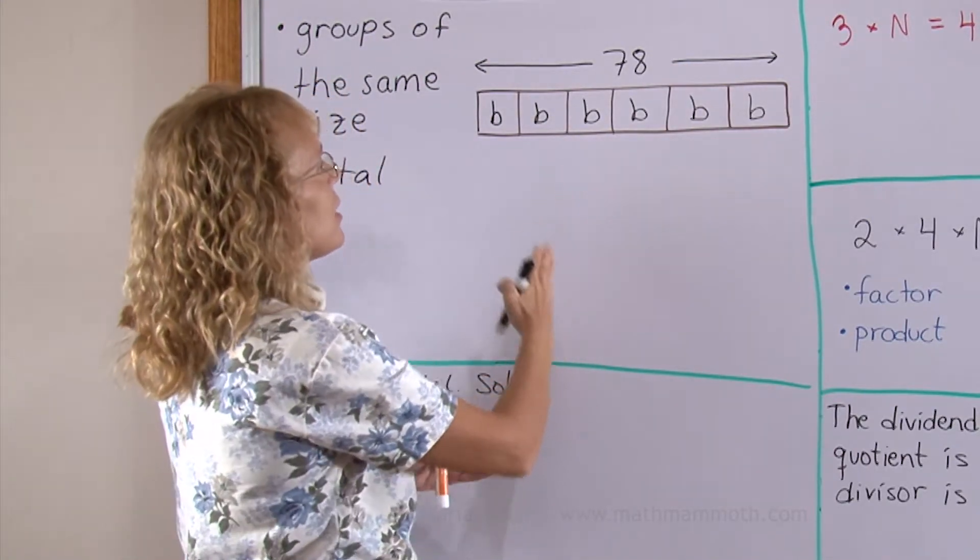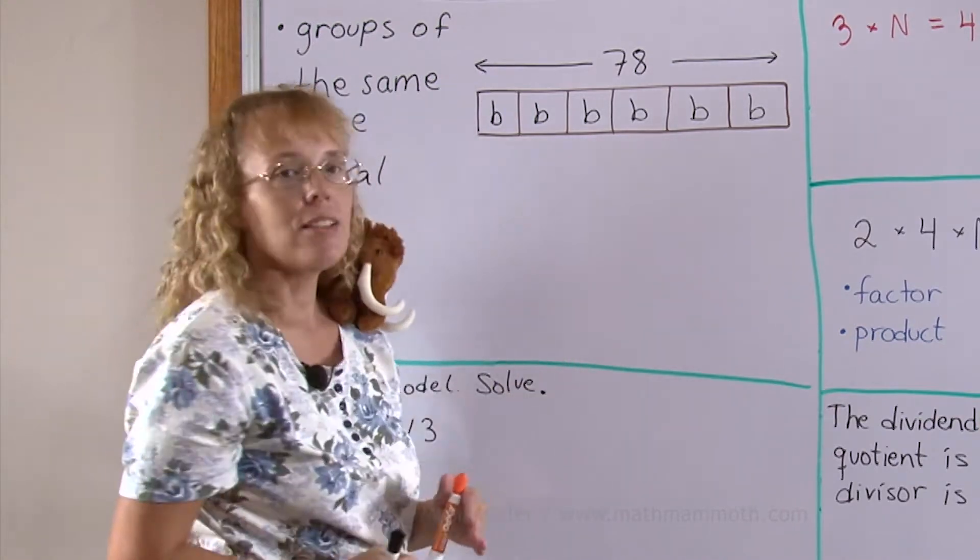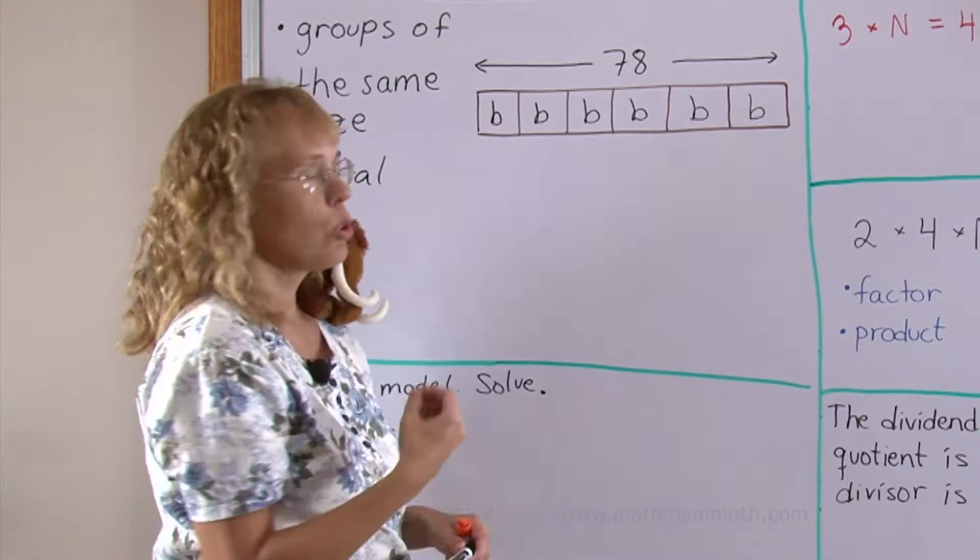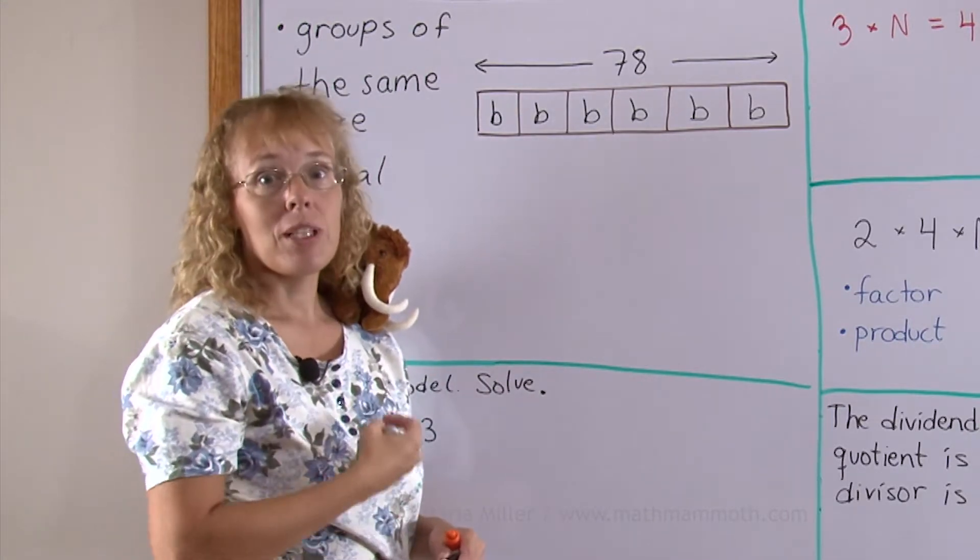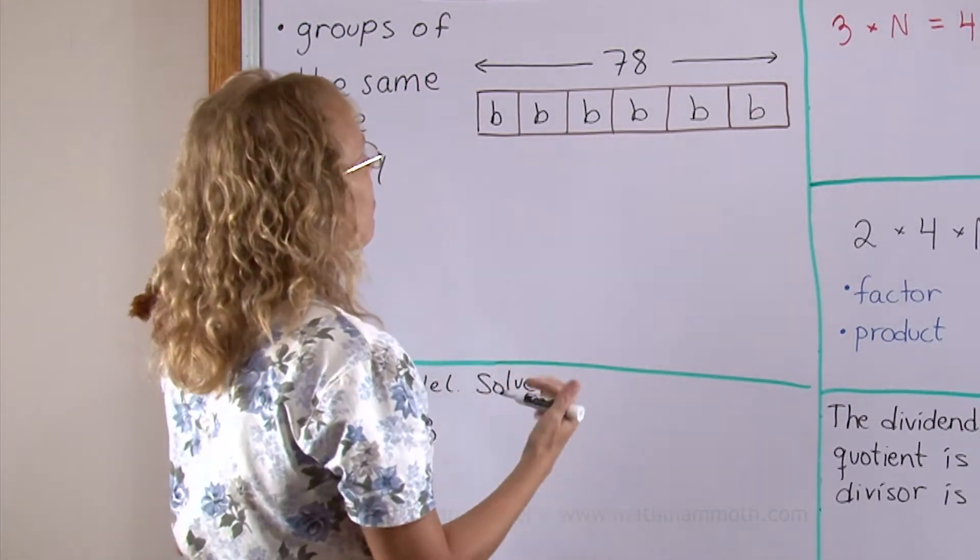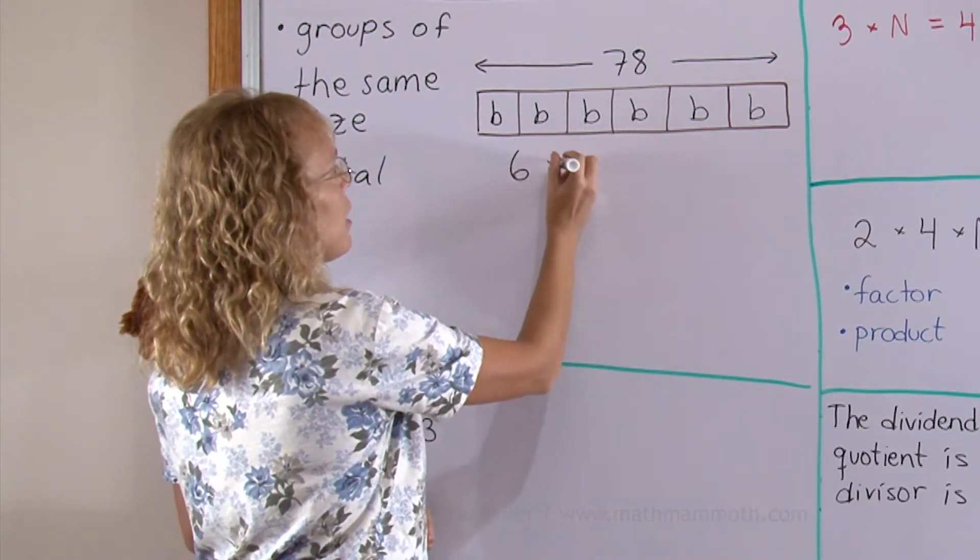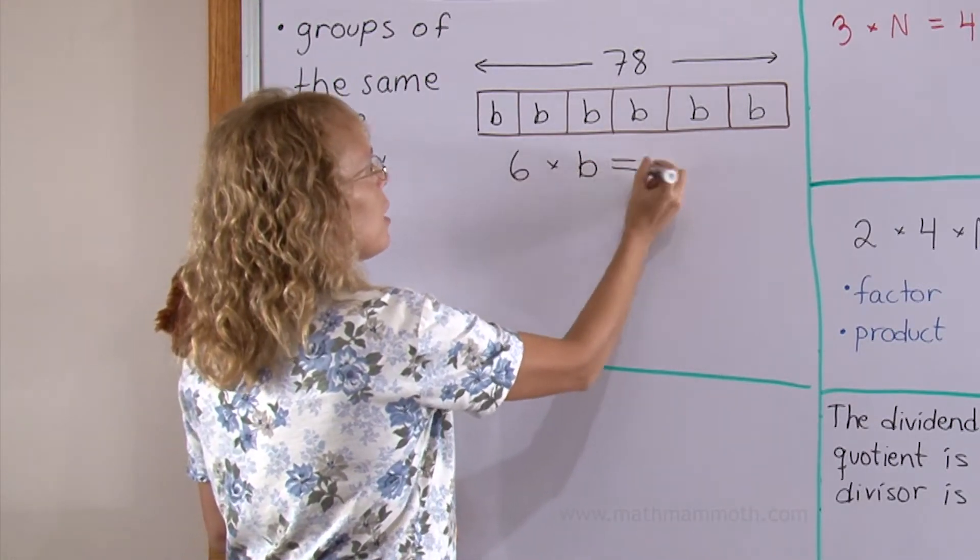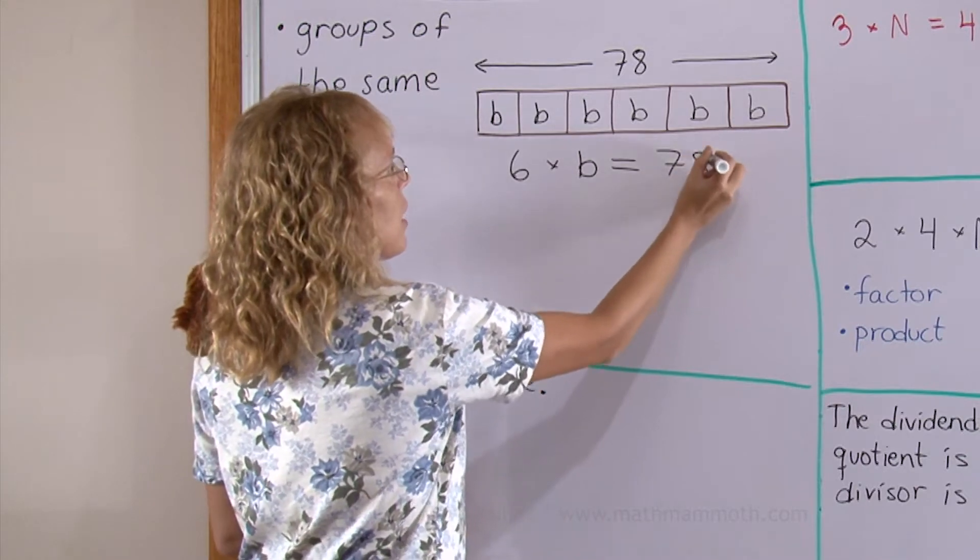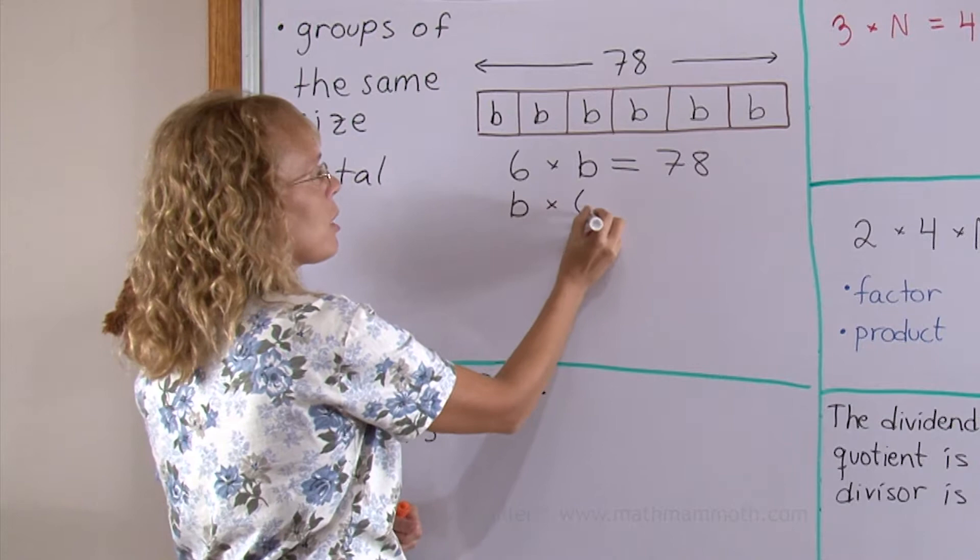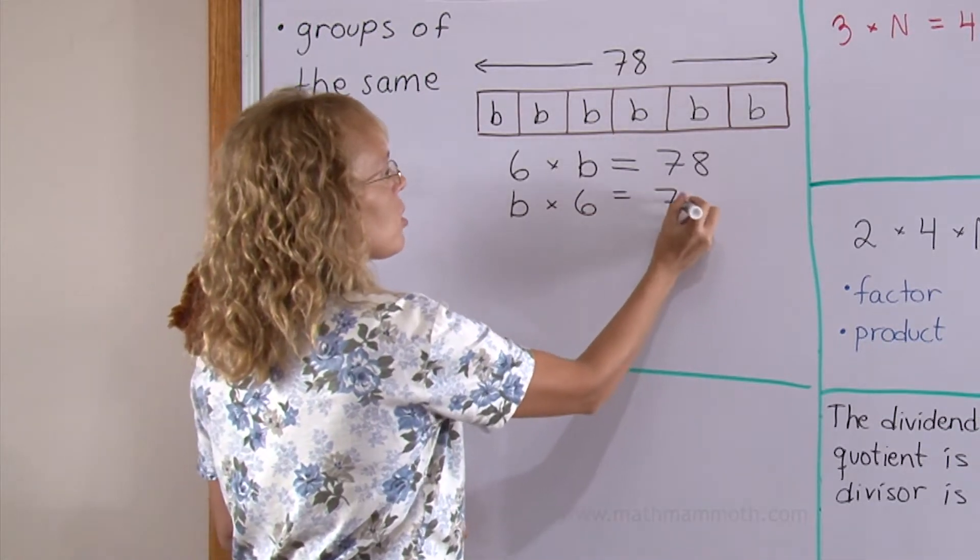So this 78 is divided into six parts here and each part is B. We can write now two divisions and two multiplications from this. First of all there's six parts. Each part is B so six times B equals the total 78. We can simply switch the order of multiplication and get another multiplication from this.